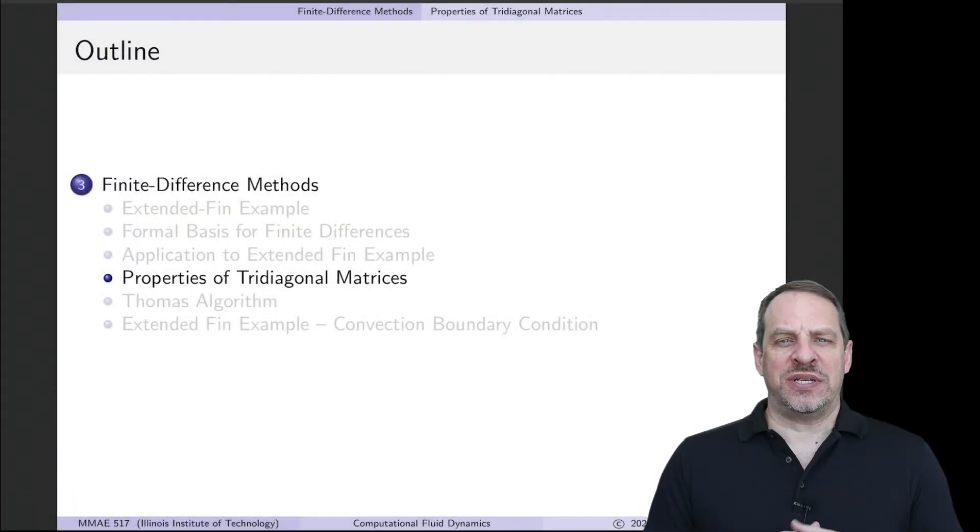In the previous video, we saw that when we apply central difference finite difference approximations to a differential equation, we end up with a tridiagonal system of equations to solve. So in this video, we're going to look at some of the properties of those tridiagonal systems. In particular, take a look at the condition number, diagonal dominance, and see how that affects the outcome when we perform operations on tridiagonal systems of equations.